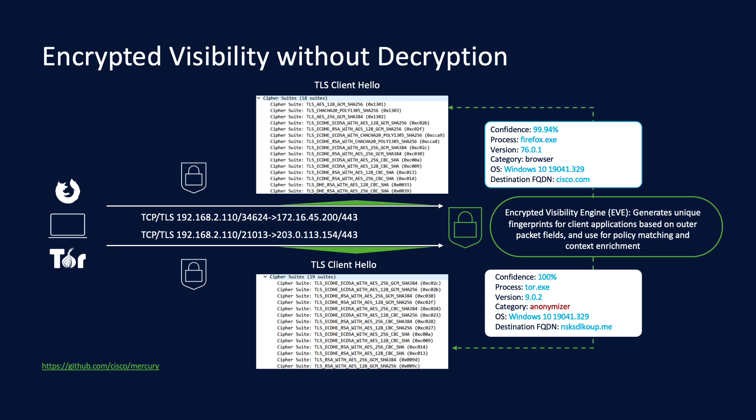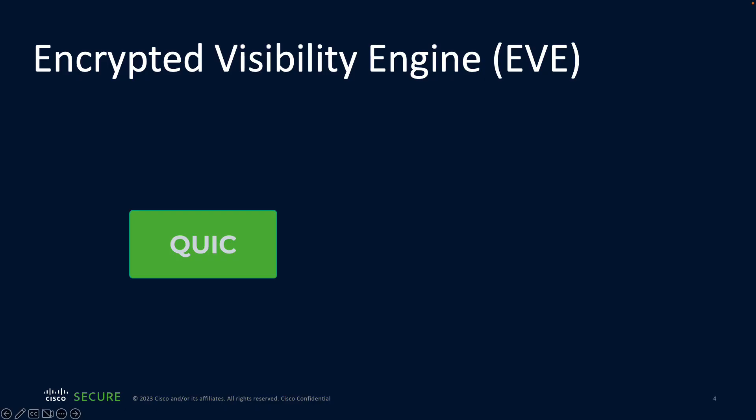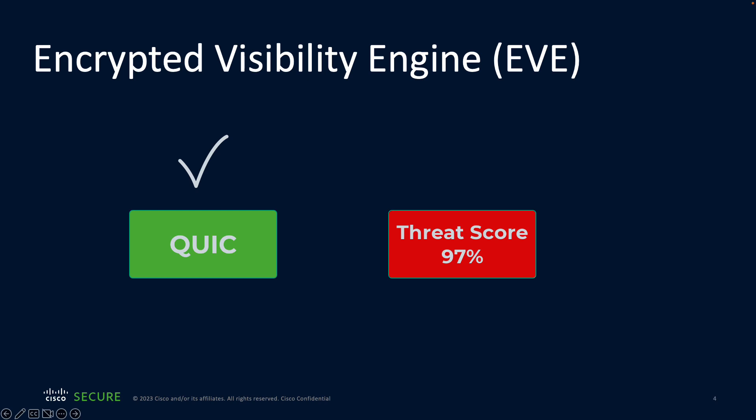In 7.3 we've extended EVE's capability by enabling the identification of client applications within encrypted flows that use the QUIC protocol. Not only that, but threat scores generated by EVE can now create indication of compromise events, enabling users to identify hosts which may be infected without performing decryption.